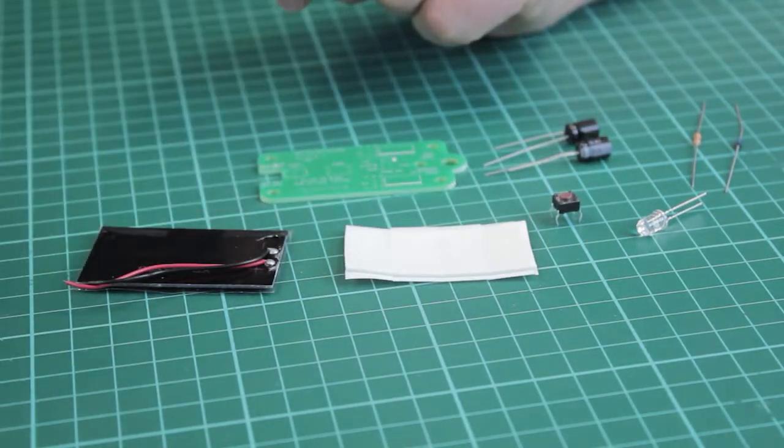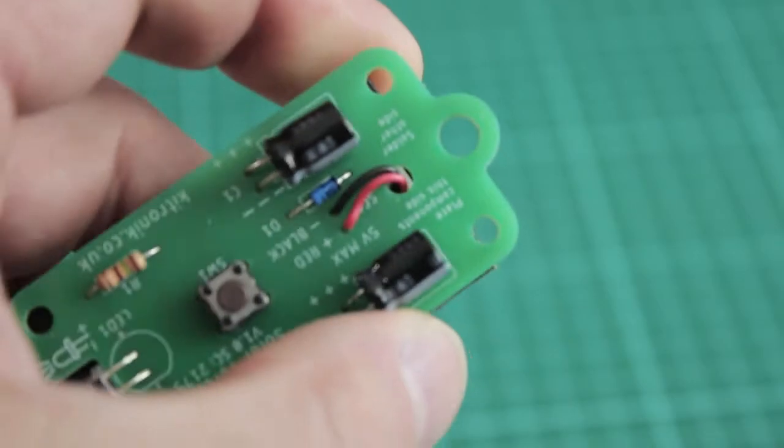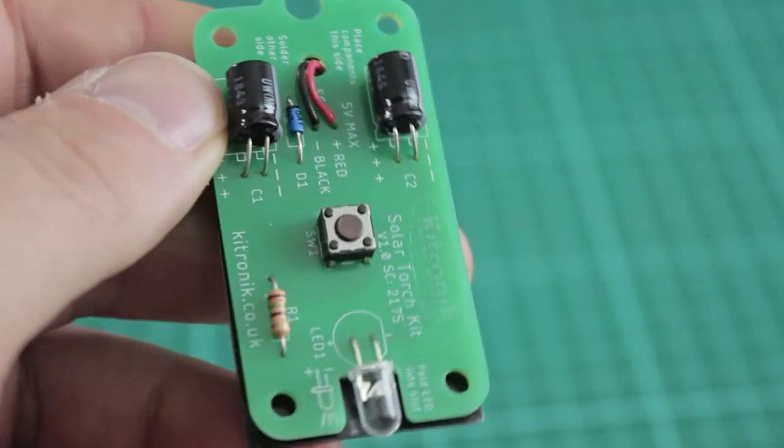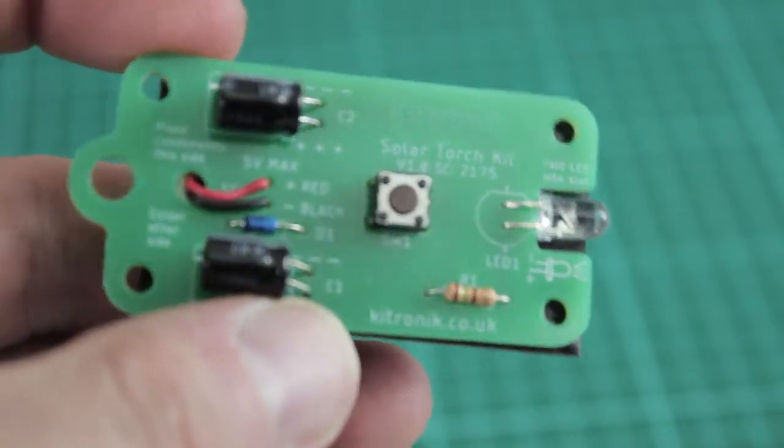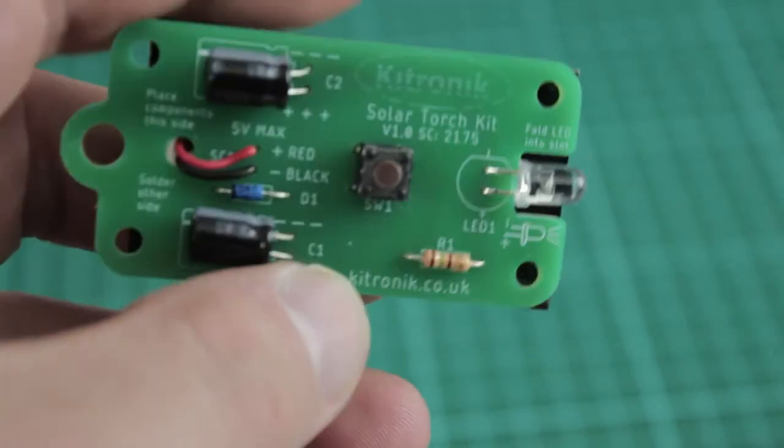The PCB is compact, and here we have a point where we can mount a keyring, and we also have four mounting holes if you want to put this into some kind of enclosure.